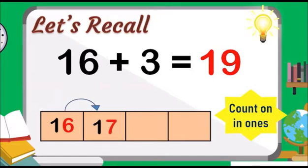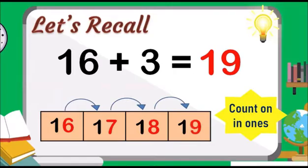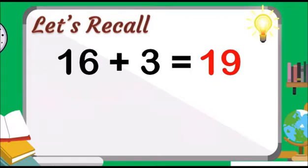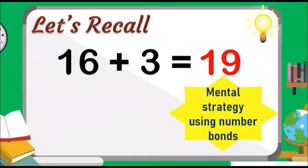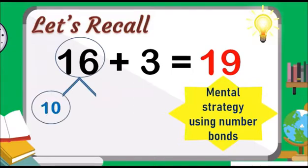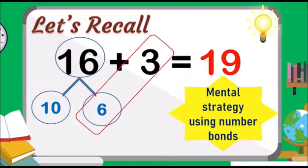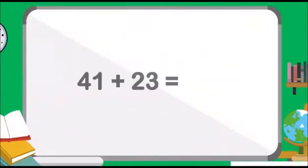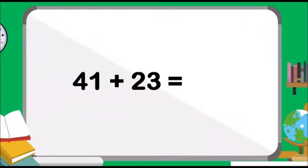16, 17, 18, 19. Do we get the same answer? Let us try checking the answer again by using number bonds. Let us split 16 into 10 and 6. Let us add the ones: 6 and 3 gets 9. Then add 10 and 9 to get 19.